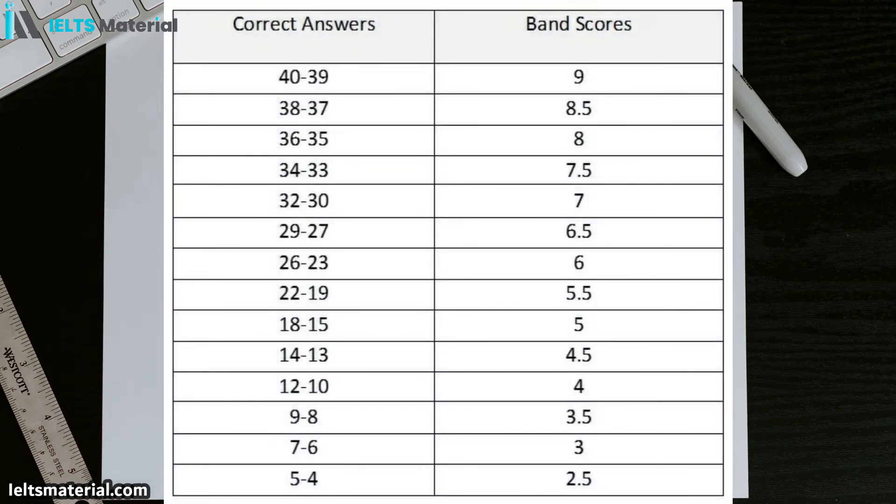Let's start by looking at the academic reading scores. For 40 to 39, you get a band 9, and all the way down to 5 to 4 correct answers, it's a 2.5. And again, most people are around 27 to 30, so you can see that's where the 7 to 6.5 band is.